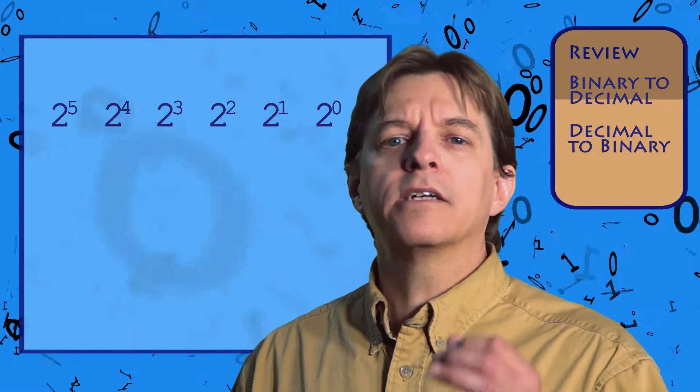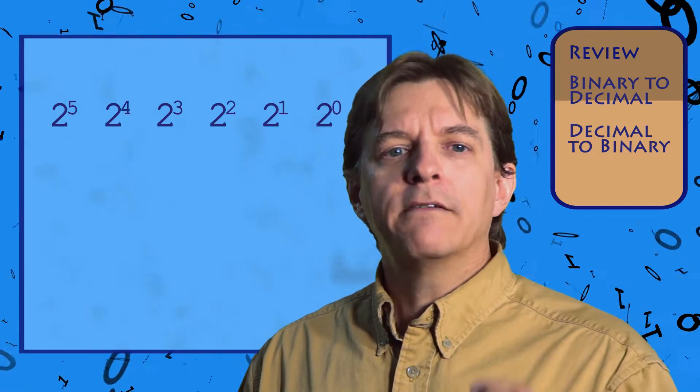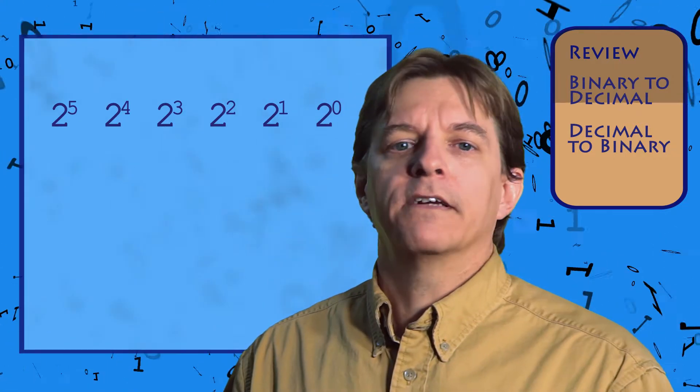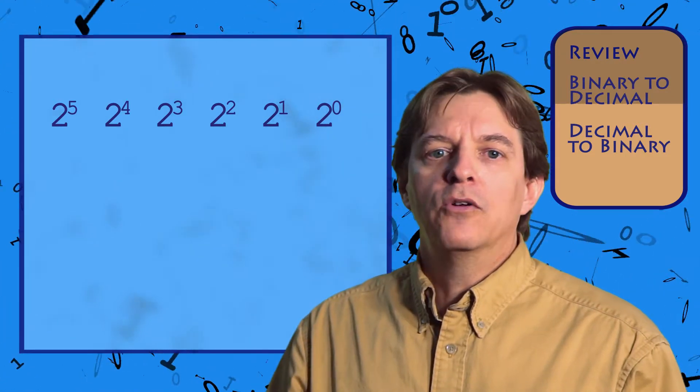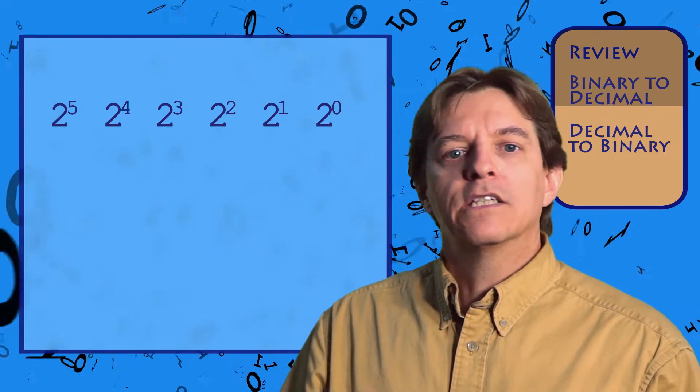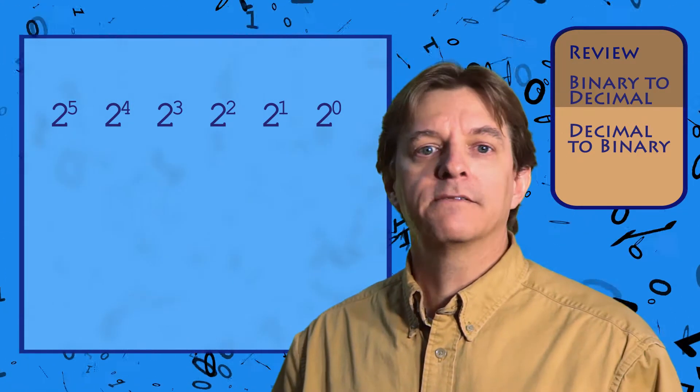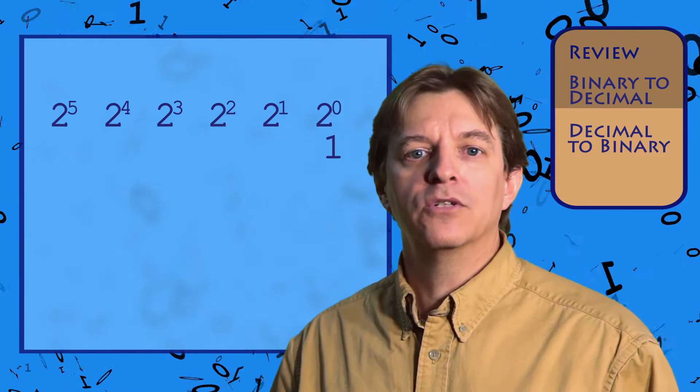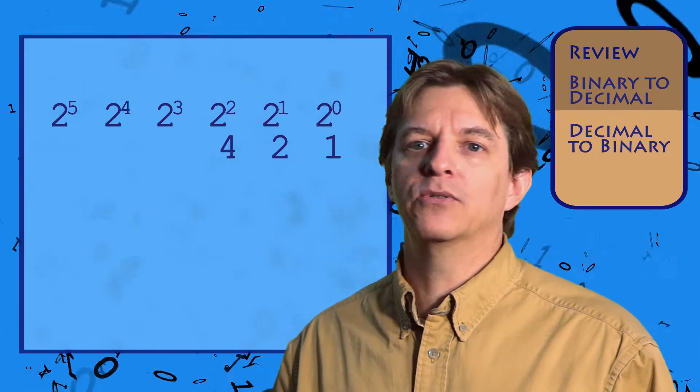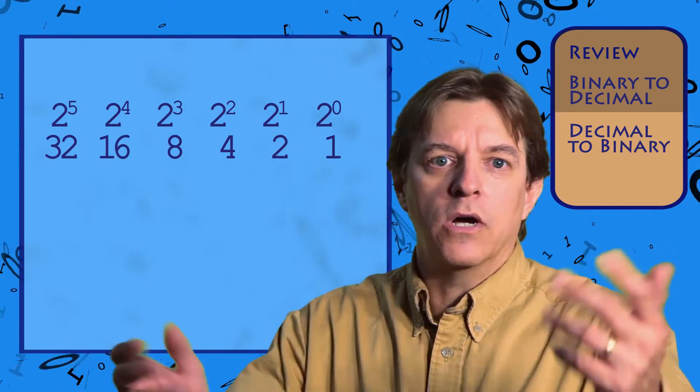Now that we know the theory, let's look at some shortcuts. Instead of looking at the columns as 2 to a power, we can look at them with specific values. Starting with the units column, we know it's 1. Each subsequent column is the current column times 2. This gives us 1, 1 times 2 is 2, 2 times 2 is 4, 4 times 2 is 8, 8 times 2 is 16, and so on.